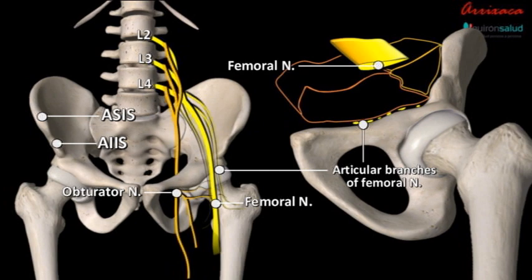The obturator nerve emerges from the ventral divisions of the second, third, and fourth lumbar nerves. It then enters the thigh through the obturator foramen and divides into the anterior and posterior branches. Articular branches arise more frequently from the trunk of the obturator nerve than from either the posterior or the anterior division.